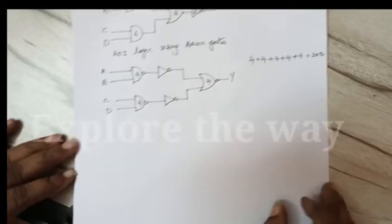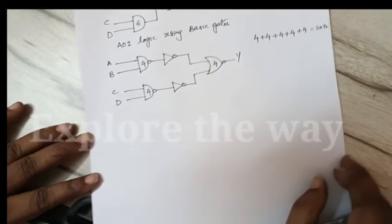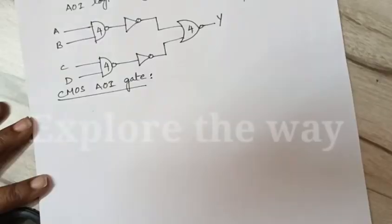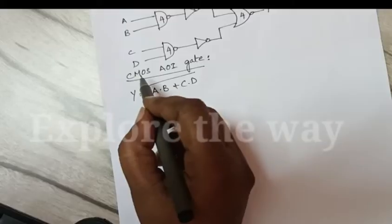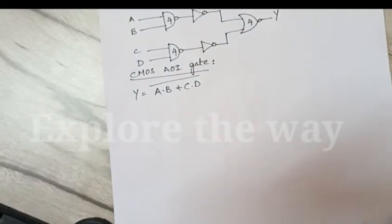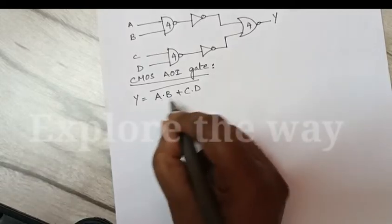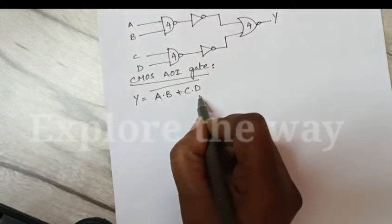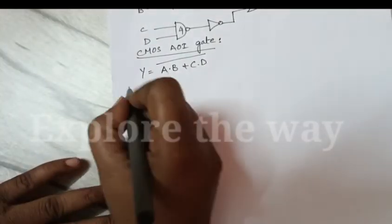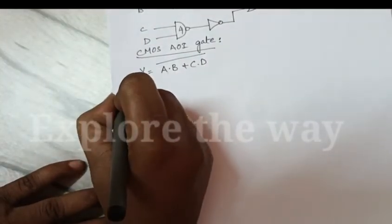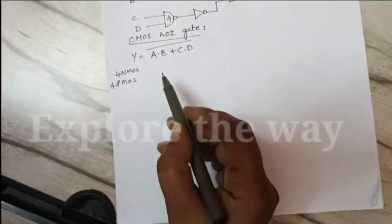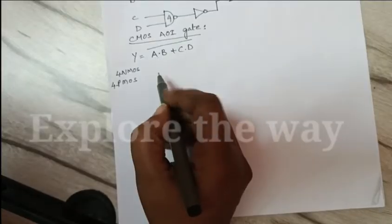Now CMOS AOI gate. The CMOS logic produces complemented output. Here the logic function is already in complemented form. So we can implement this logic function by using 4 NMOS transistors and 4 PMOS transistors, because 4 variables are included in the logic function.